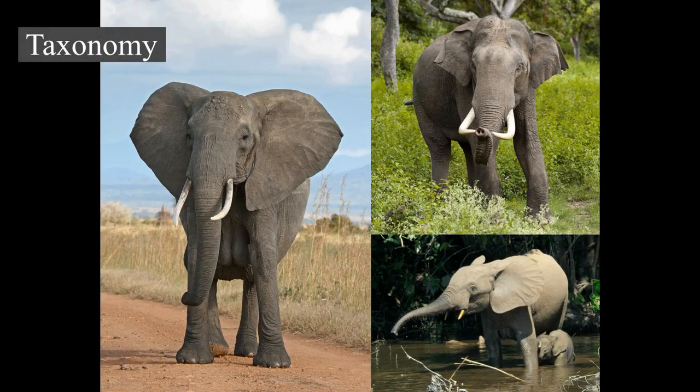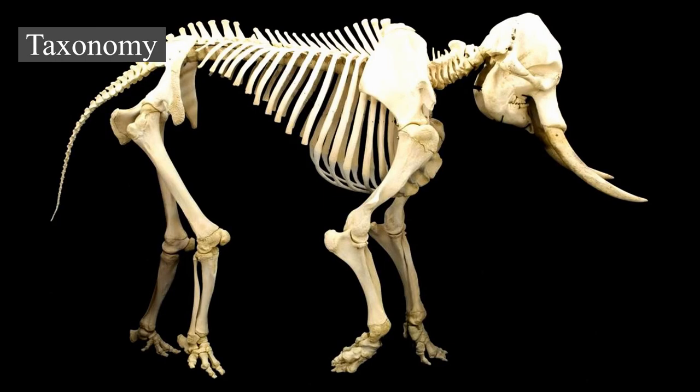Taxonomy: Alongside their closest relatives, elephants belong to the family Elephantidae, the sole remaining family within the order Proboscidea. Their closest extant relatives are the sirenians — dugongs and manatees — and the hyraxes, with which they share the clade Paenungulata within the superorder Afrotheria. Elephants and sirenians are further grouped in the clade Tethytheria.